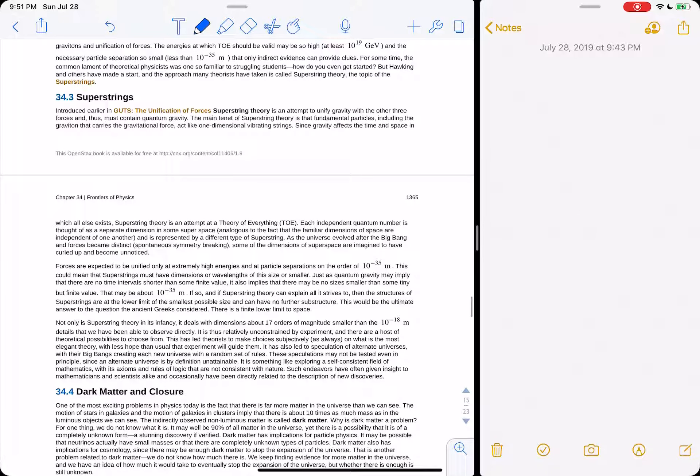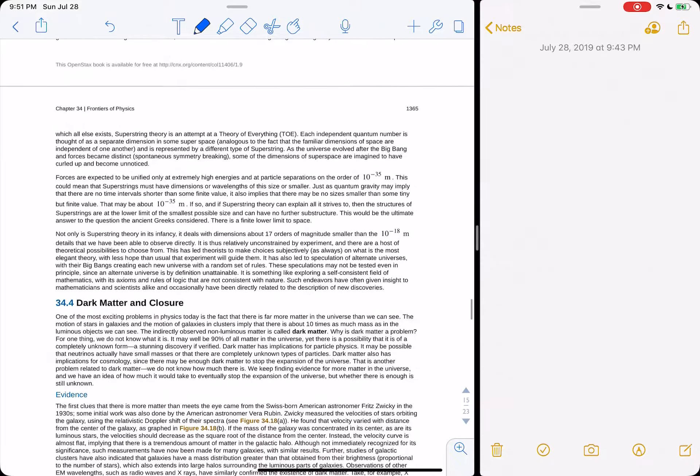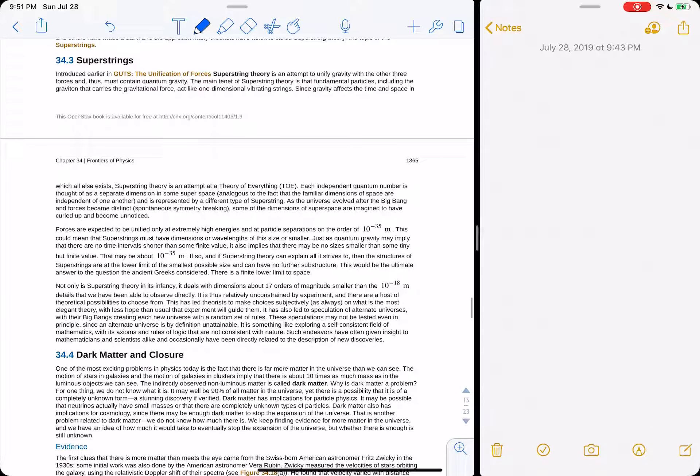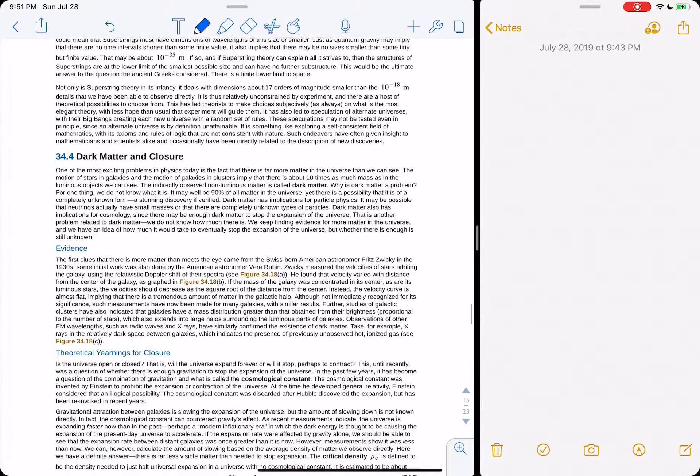Super string theory is the theory to explain everything since the 1980s. So far it has not explained anything. It's made zero predictions and has had zero experimental evidence backing it up, and it's been a problem. Very smart people are working on it and people are worried that they're wasting their time. So it's been a point of controversy for the last 20 years because all of this hype resulted in nothing.